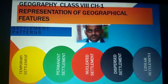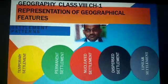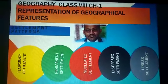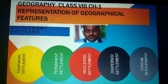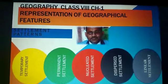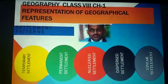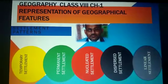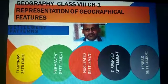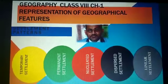The third type, the nucleated settlement, is generally clustered around a well, a temple, or a junction of roads. These are generally important village settlements with respect to their functions, size, and the facilities offered — such as availability of water, transport, network of roads, and railway stations.